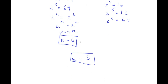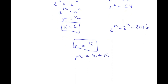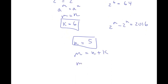So now we have our value for n and our value for k: n is equal to 5 and k is equal to 6. However, remember our original equation was 2 to the power of m minus 2 to the power of n equals 2016, and so far we've found n but not m. But remember, we stated at the start that m was equal to n plus k. We have both values, so m is equal to 6 plus 5, which is 11.